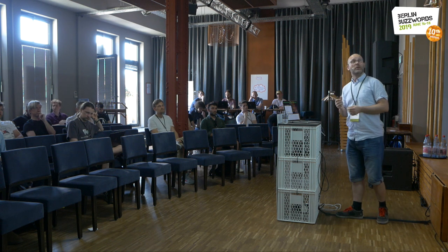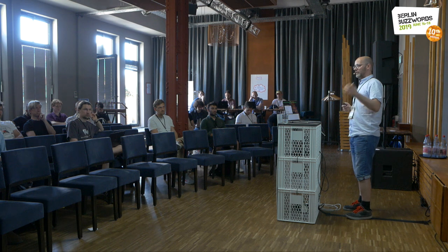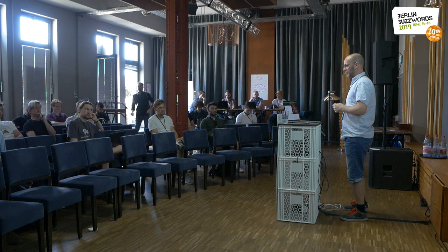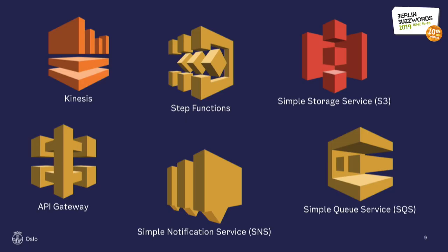We're currently using serverless to build a set of microservices — essentially REST APIs — for things like metadata APIs, but also processing pipelines for data transformations, validations, and connecting components together. We use many different Amazon services: Kinesis for stream processing, API Gateway for REST APIs, Step Functions for orchestration, and more.